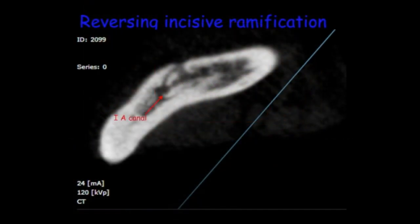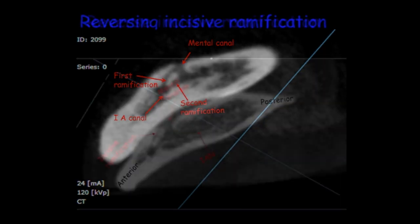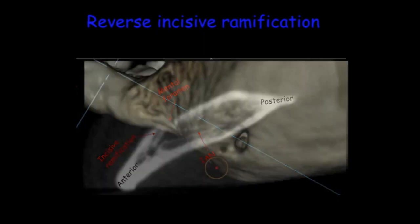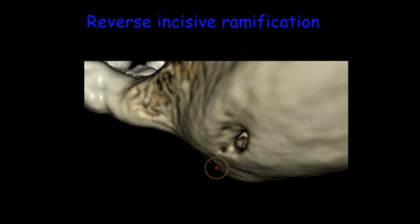Sometimes, in a real situation, we can see the inferior alveolar canal splitting into two ramifications before exiting through the mental canal. And in a very rare situation, we can see a reverse instance of ramifications going back and exiting through the mental foramen, as in this case — with a 3D image showing the exit of the reverse ramification.